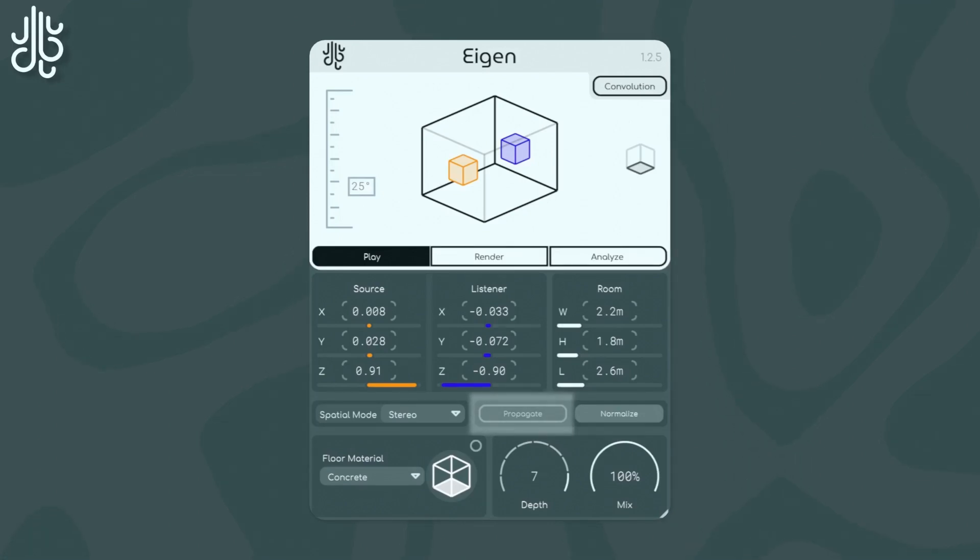The Propagate button to the left of the Spatial Mode dropdown toggles whether or not the initial delay between the source and listener occurs. This propagation of sound happens in the real world and is accurately calculated in Aigen, but it can be disabled, and every other subsequent early reflection will be backshifted by the initial delay to account for this.